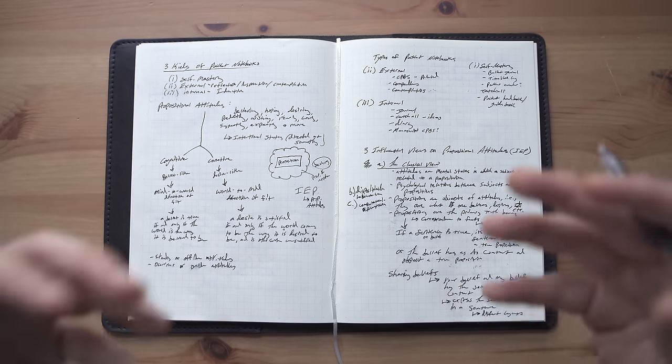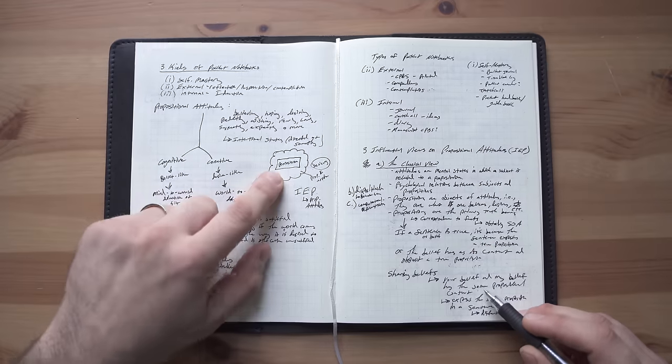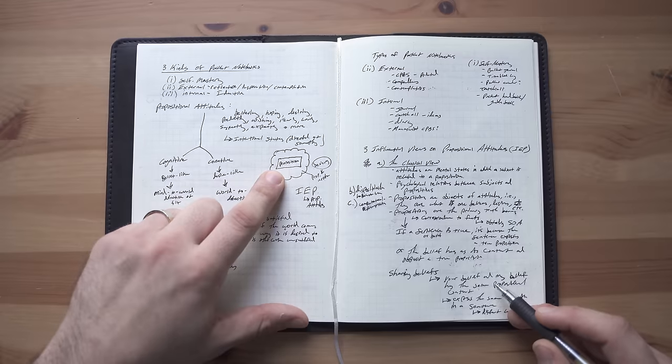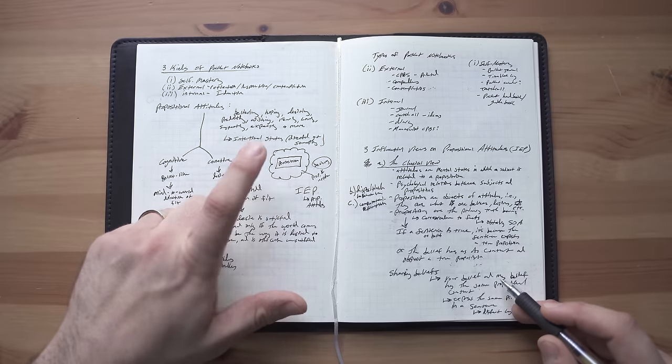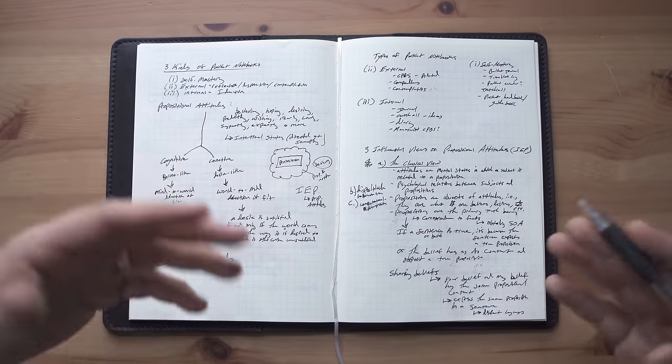Well, your belief and my belief have the same propositional content. So you believe that the cat is on the mat and I believe that the cat is on the mat. We're both affirming or believing the same propositional content. The proposition that the cat is on the mat, even though you and I have different mental events.